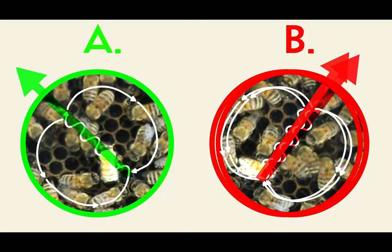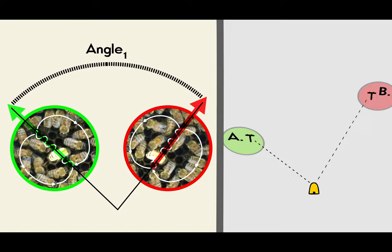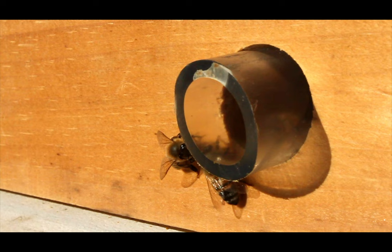Incredibly, the angle of rotation precisely matches the angle between the feeding stations and the hive. This must be a clue to the mystery of how the bees are able to share information about the location of food.